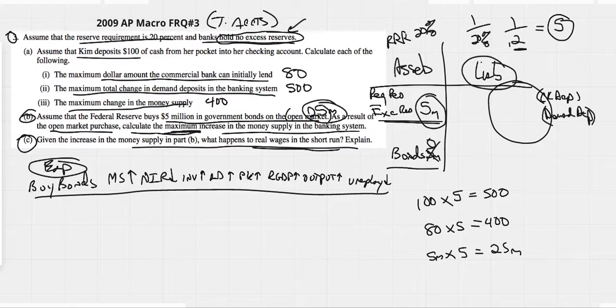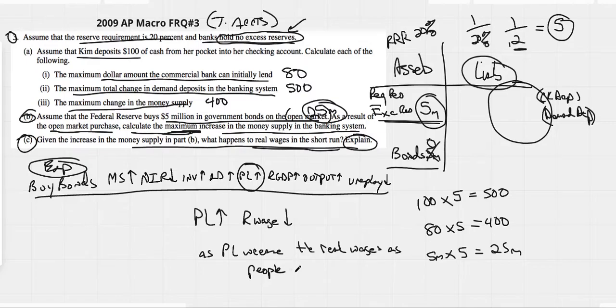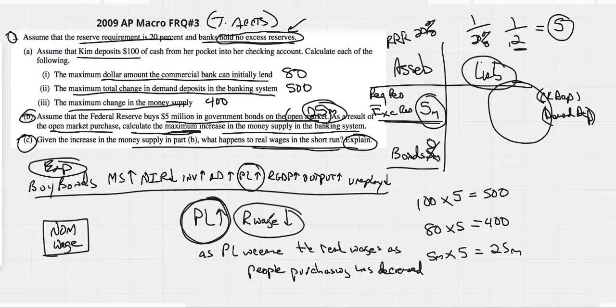They're just asking about real wages. All we have to know with real numbers is what's going on with the price level. If your price level is going up, your real wage has to be falling. They want us to explain. So we would say that as price levels increase, the real wage falls as people's purchasing power has decreased. College Board loves the word purchasing power. So understand this, your real wage shows what you can actually put in your grocery cart. So if the price of everything goes up, you can put less and less in your grocery cart. Your nominal wage, which is the wage you actually get paid, might not have changed at all. But when the price level goes up, you can buy less stuff. Therefore, your real wage, what you can really buy, has absolutely decreased.